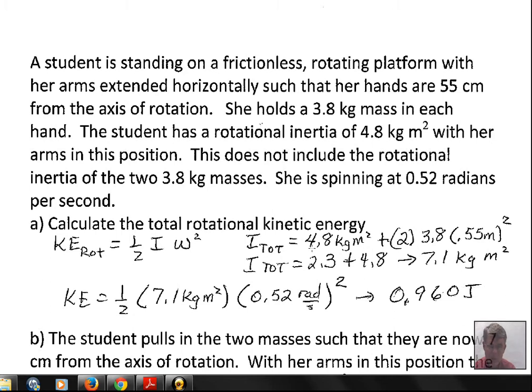The total I is going to be made up of the person's body rotational inertia, 4.8 kg·m², plus two masses that are 0.55 meters from the axis of rotation. So the I value for a single mass is 3.8 times 0.55 squared—that's mr²—and there are two of those masses, so we have a factor of two.